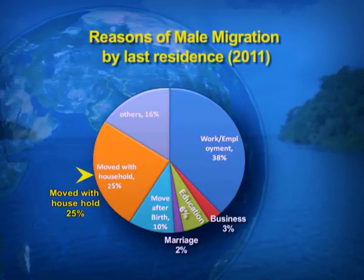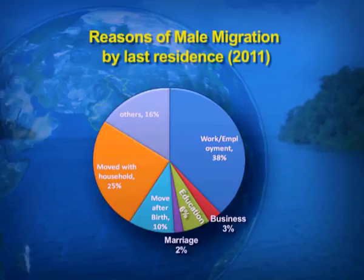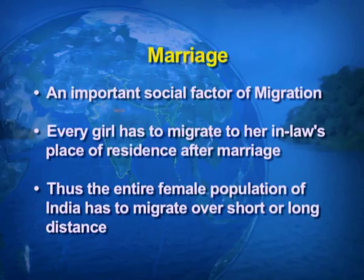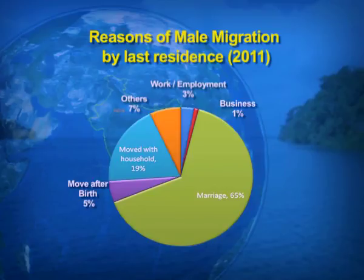25 percent of male migration is when they move with their households — meaning the whole family shifts, not a single person. The least percentage of migration under males is marriage. And that which is least under male migration, you will find in the other visual indicating female migration — where more than 50 percent, that is 65 percent of female migration, is only because of marriage.